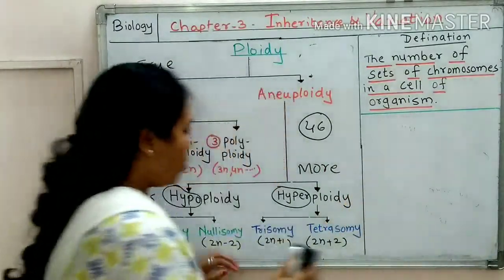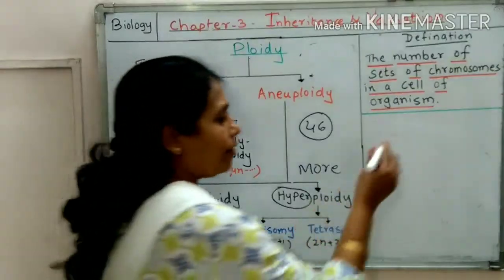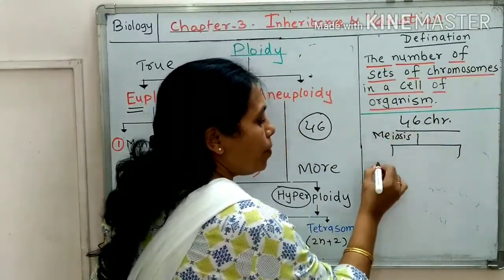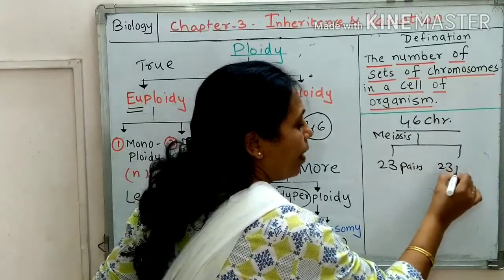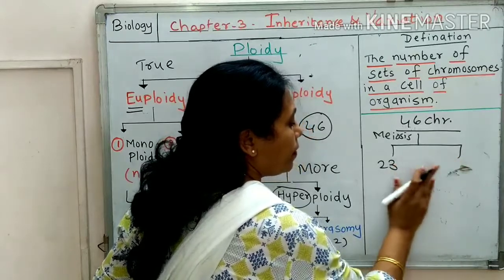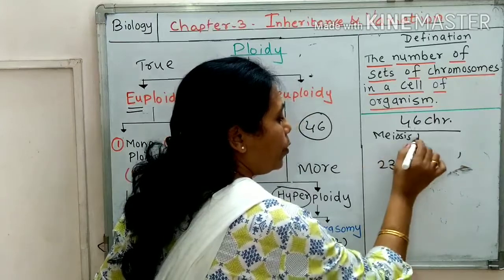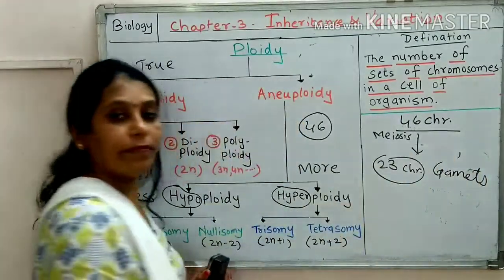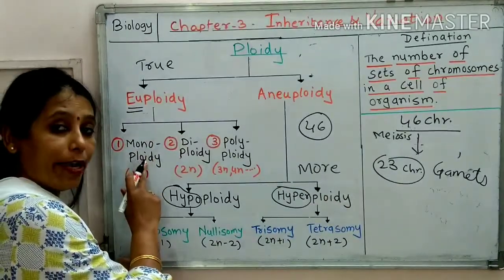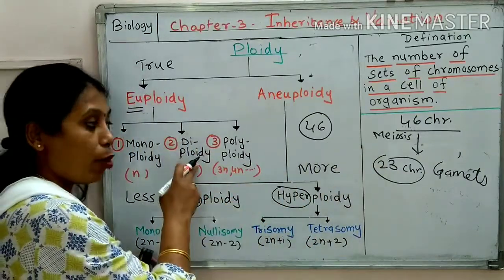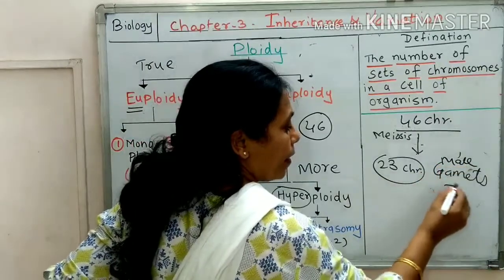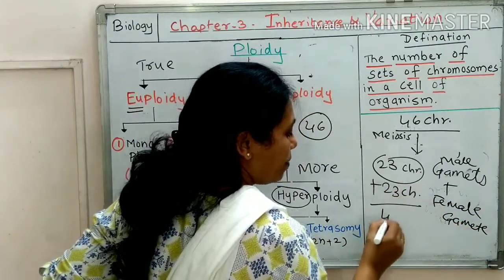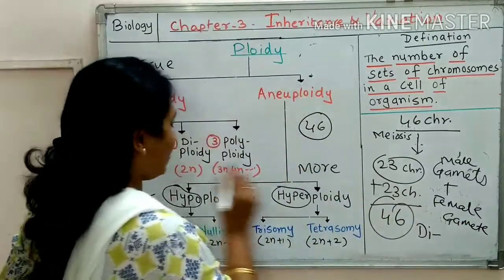The example of monoploidy: as we have 46 chromosomes, when meiosis takes place this chromosome number is reduced to half — 23 chromosomes. These chromosomes are present in the gametes. So monoploidy example is gametes, because a single set is present. For diploidy, suppose this is a male gamete, it fuses with a female gamete. 23 plus 23 becomes 46, and the condition becomes diploidy.